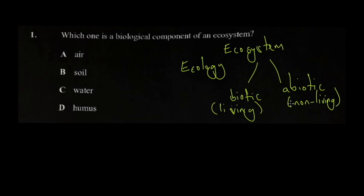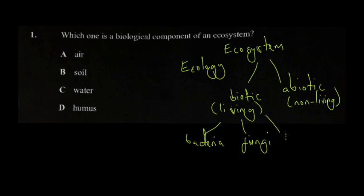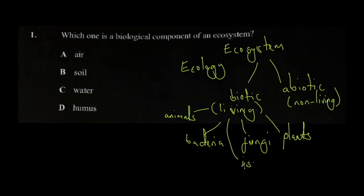If you just want to know the biotic components, those are easy to know because they are not too many. You're looking at bacteria, fungi, flora — which means plants — and also animals, which means fauna. Insects are also part of the biome, so they are part of the biotic components of the ecosystem.